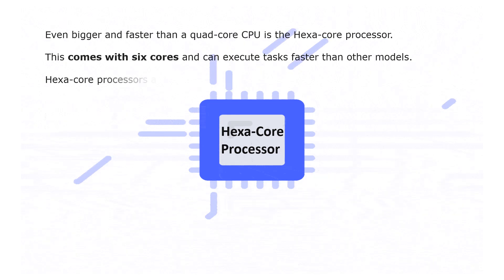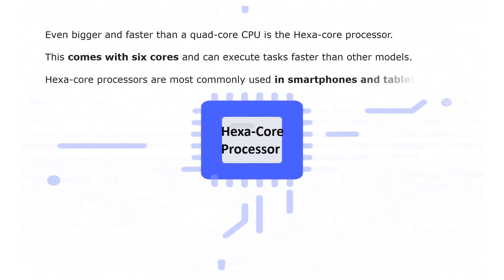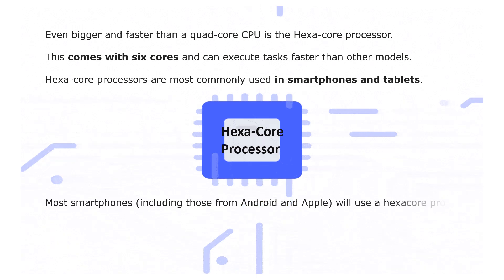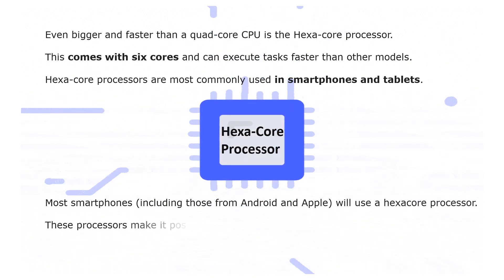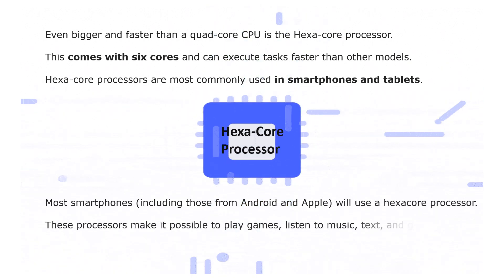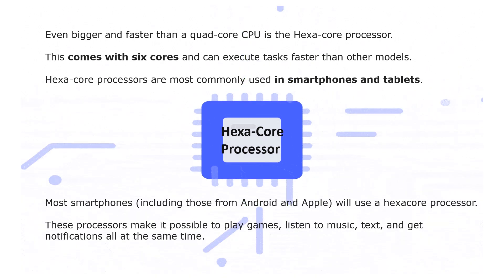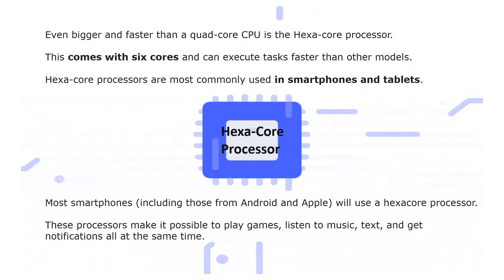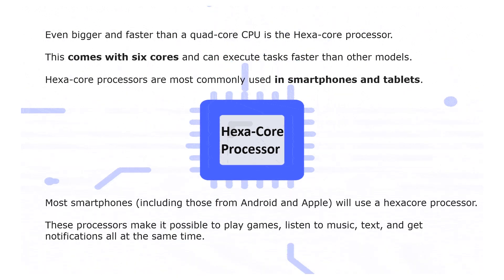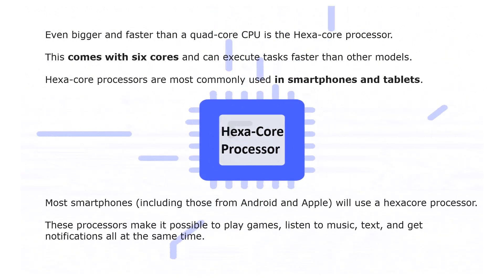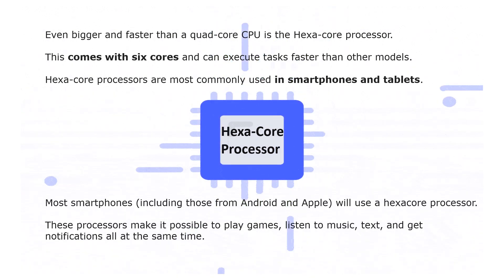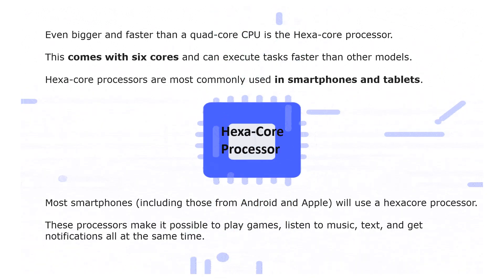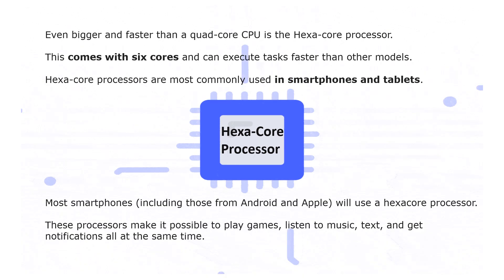The hexa core processor comes with six cores and can execute tasks faster than other models. Hexa core processors are most commonly used in smartphones and tablets. Most smartphones, including Android and Apple devices, use hexa core processors. These processors make it possible to play games, listen to music, text, and get notifications all at the same time.